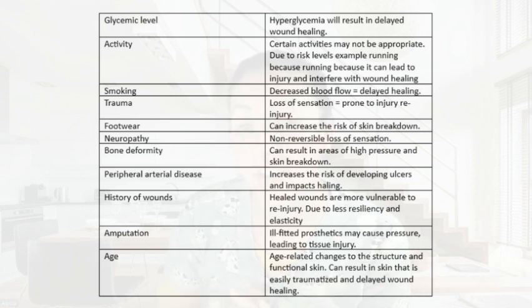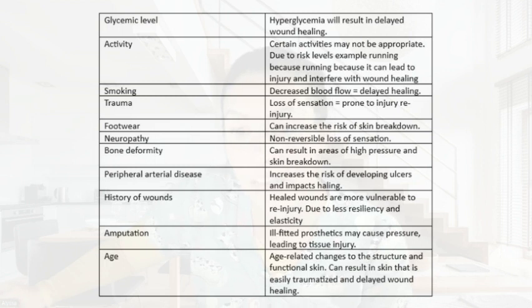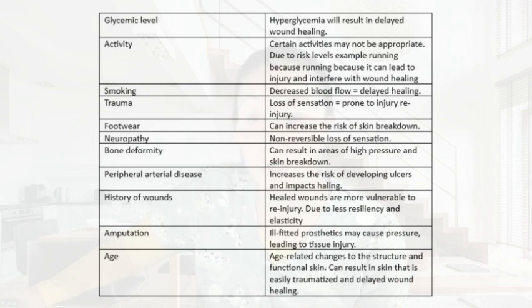Neuropathy is a non-reversible loss of sensation. Bone deformity can result in high areas of pressure and skin breakdown. Peripheral arterial disease increases the risk for developing ulcers and impacts healing. A history of previous wounds makes a patient more vulnerable to re-injury. Ill-fitted prosthetics can cause pressure in areas and lead to tissue injury.